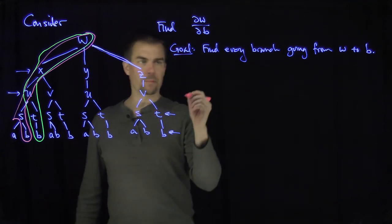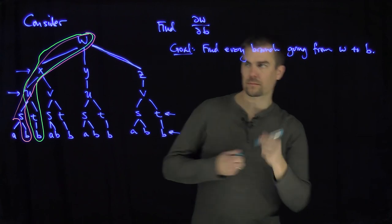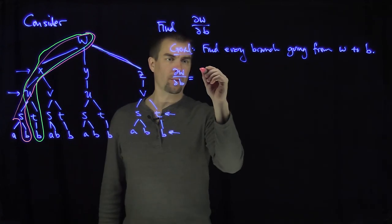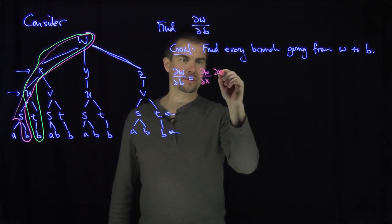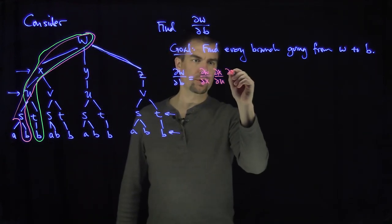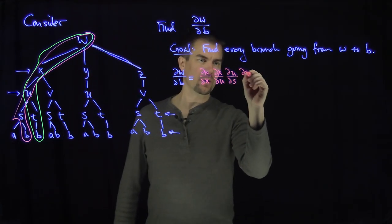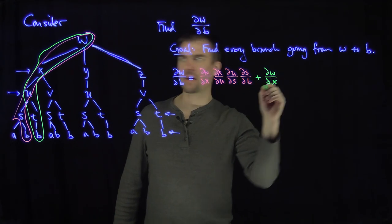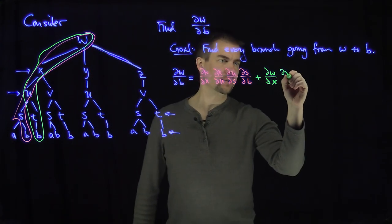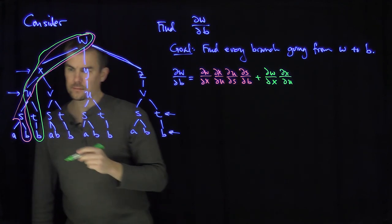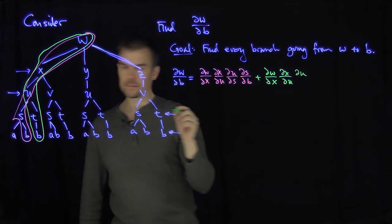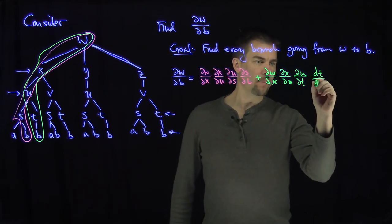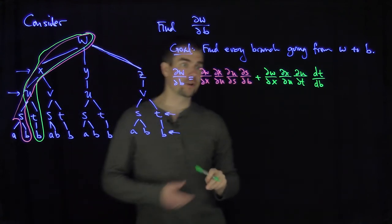So partial w partial b will include these terms. For the trajectory w→x→u→s→b: partial w partial x, times partial x partial u, times partial u partial s, times partial s partial b. For the trajectory w→x→u→t→b: partial w partial x, times partial x partial u, times partial u partial t, times dt db — an ordinary derivative since t is a function of the single variable b.